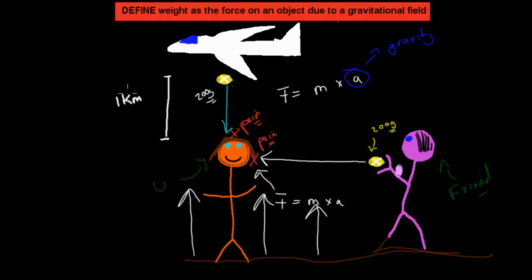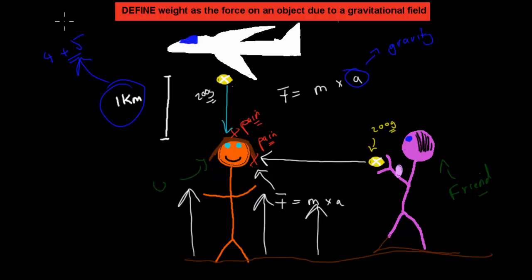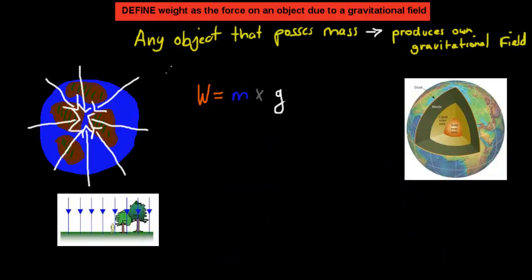Interestingly, the higher up the ball is, the more painful it will be — but we'll talk about that in a future video, probably videos 4 and 5 of this module. For now, we'll just focus on two things: weight and gravity. The dot point says define — that's the verb in bold — define weight as the force on an object due to the gravitational field. So this gravitational field is making this object produce a force because it's making it accelerate. I'll go through a bit more with a couple of examples.